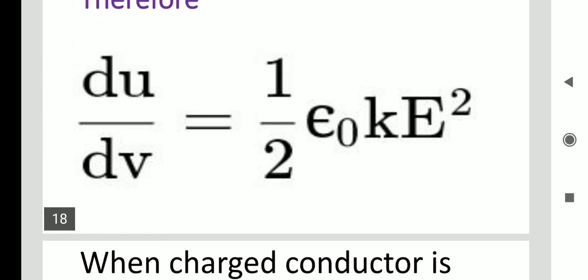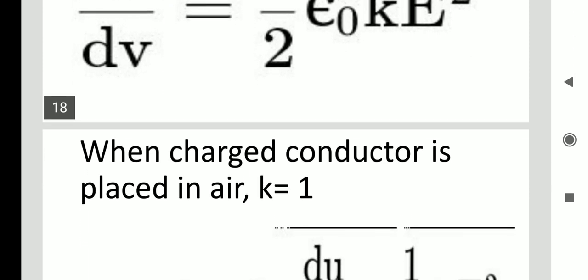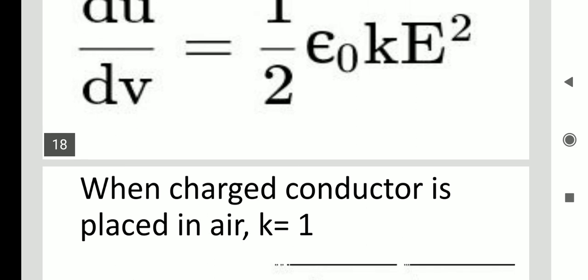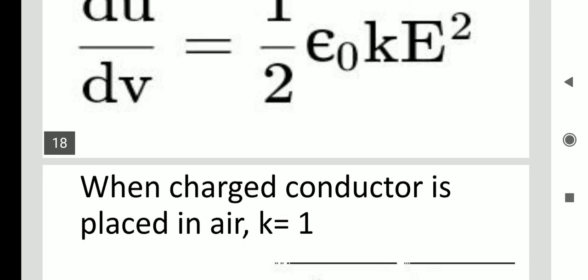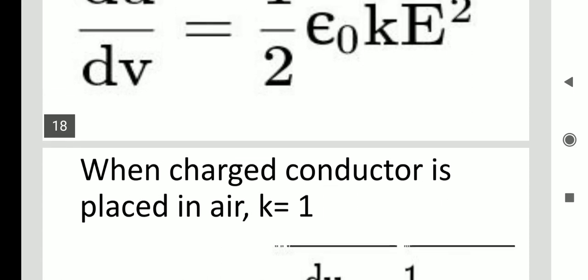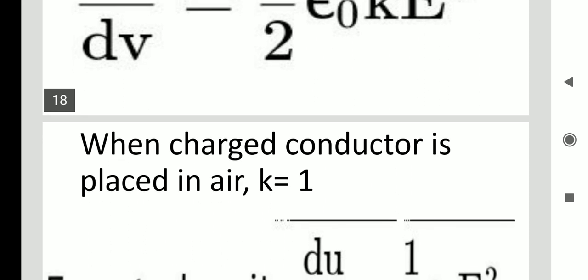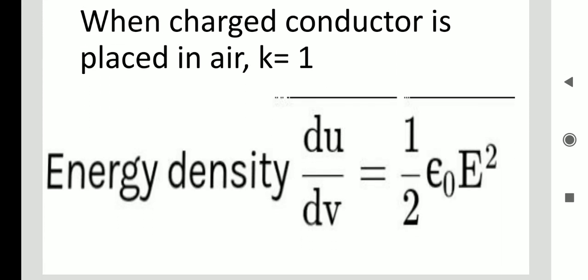When a charged conductor is placed in air, the dielectric constant k equals 1. Therefore, the energy density simplifies to: du/dv = ½·epsilon-naught·E². This is the energy density in electric field. Thank you.